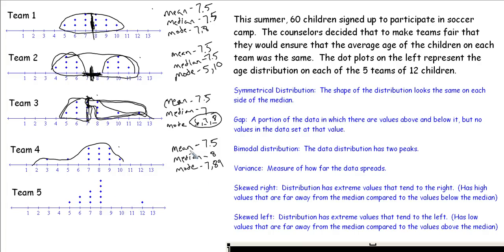Looking at Team 5, this distribution, we have this one 12-year-old stretched far away. We'd have one peak in this data and then this outlier over here beyond the gap. Our mean in this problem would be 7.5. The median would be 7.5 because we have six values here and six values here. And our mode here is 8.